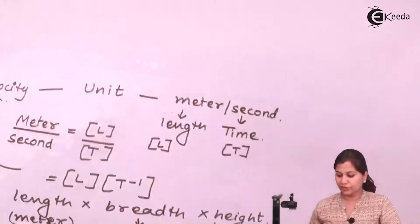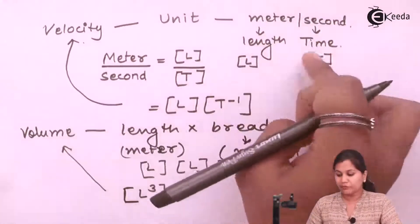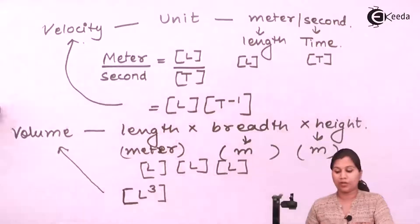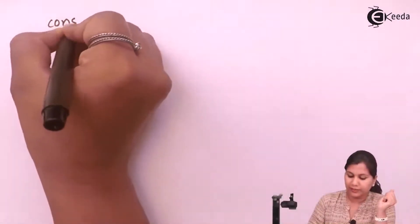Every physical quantity, because it is measured in terms of other physical quantities — like velocity is measured in terms of length and time — has its own formula. So what we do is express that formula in terms of mass, length, and time to find the dimension. If some constant term is involved in that formula, constant terms are dimensionless.